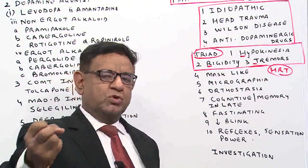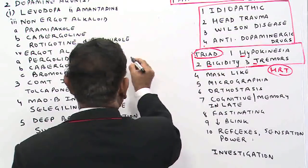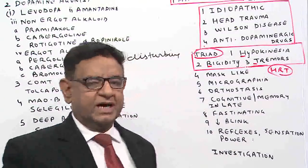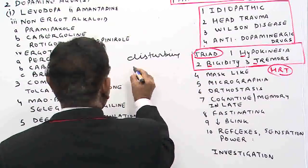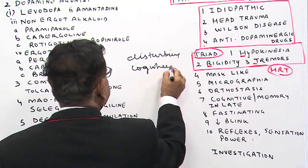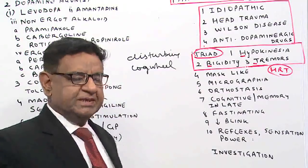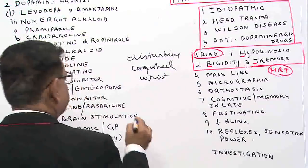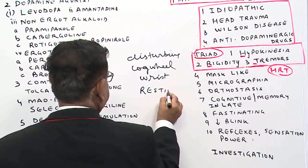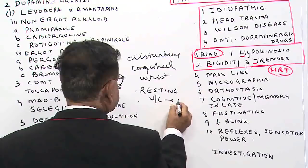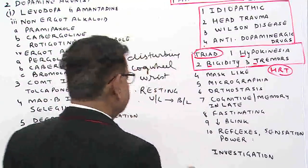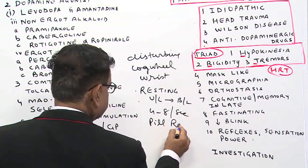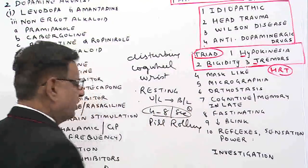Hypokinesia means slow movement. This is the most disabling and most disturbing feature for the patient because all movements are very slow. What about rigidity? It is cogwheel rigidity and it is best elicited in the wrist joint. Tremors are resting tremors; they usually begin unilaterally but later may become bilateral. They are 4 to 8 per second, and pill-rolling movement can be there.